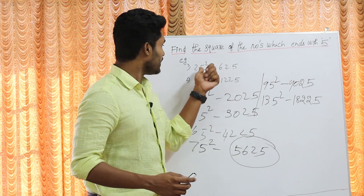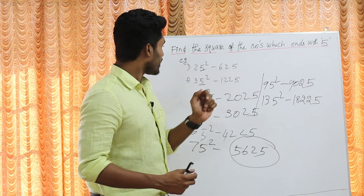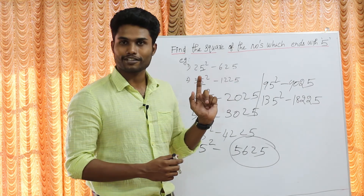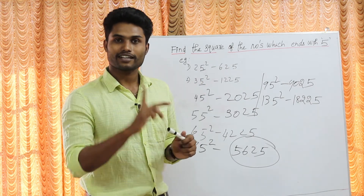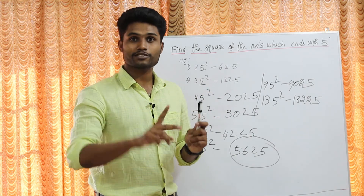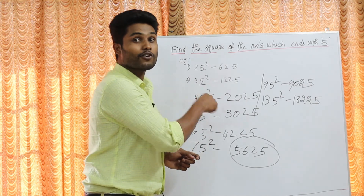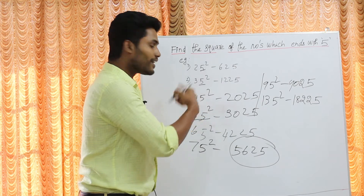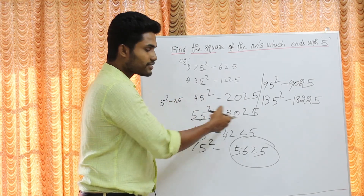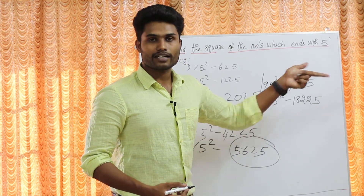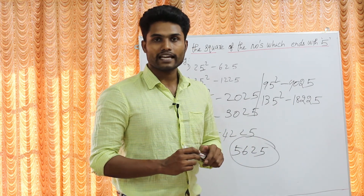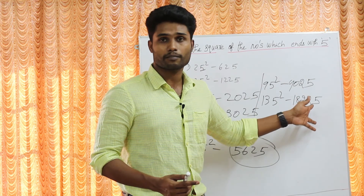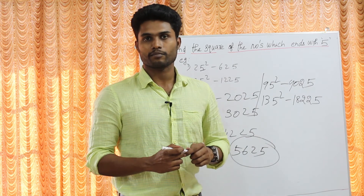Same topic summary: to find the square of numbers ending in 5 — for example 25 square, 35 square, 45 square — the last two digits are always 25. For the first part: square the tens digit and add the tens digit. So for 25: 2 squared is 4, plus 2 is 6, giving 625. For 35: 3 squared is 9, plus 3 is 12, giving 1225. For 45: 4 squared is 16, plus 4 is 20, giving 2025. For 135: 13 squared is 169, plus 13 is 182, giving 18225. Use this in bank, SSC, railway, and insurance exams. Calculate in your mind on the paper. Okay, bye.